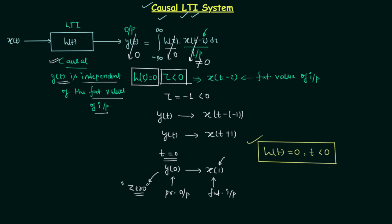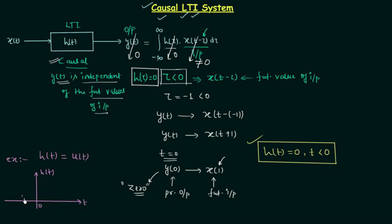Let's take one example to understand this. The impulse response is given as h(t) equals u(t), which is the unit step function. You can plot the waveform easily. When t is less than 0, h(t) equals 0. When t is equal to 0 or greater than 0, the value of h(t) becomes unity, that is 1. You can check this condition: when t is less than 0, h(t) equals 0, so this condition is satisfied and the given LTI system is causal in nature.